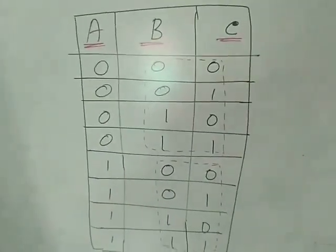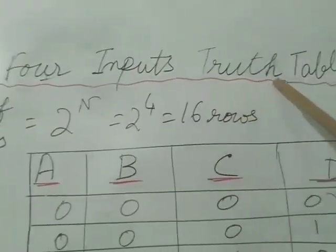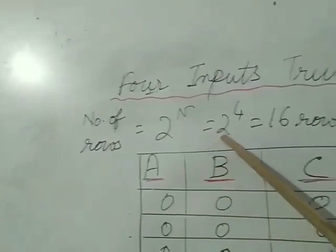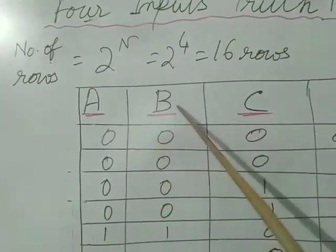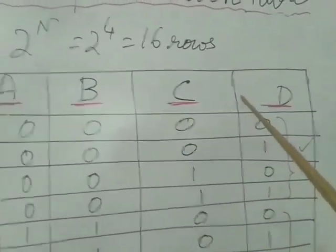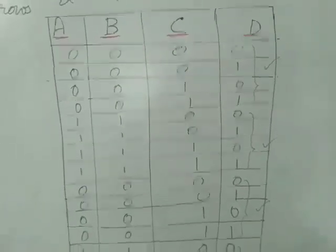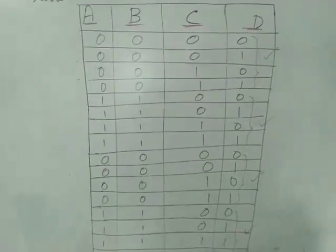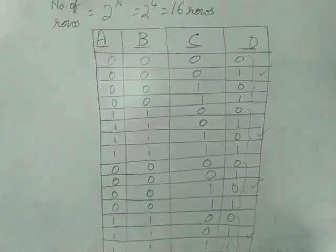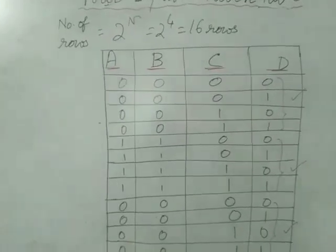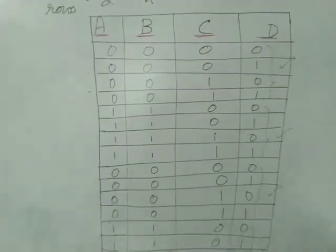We'll see how to create a truth table using 4 inputs. The number of rows will be 2 to the power n — with 4 inputs, that's 16 rows total. The inputs are A, B, C, and D. The same sequence is repeated 4 times. You have to know this format, as it is very important for solving problems using K-map.